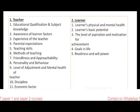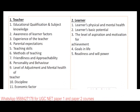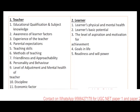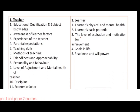When we go with the learner factor: learner's physical and mental health, basic potential, level of aspiration and motivation for achievement, goals in life, and readiness and willpower. Many previous year questions give options like learner's parents' qualification or socioeconomic background — those are not the right answer. The correct factors are mental health, physical health, basic potential, capability, aspiration, goals, and readiness with willpower. When reading theory concepts, try to recall what type of questions have been asked earlier.